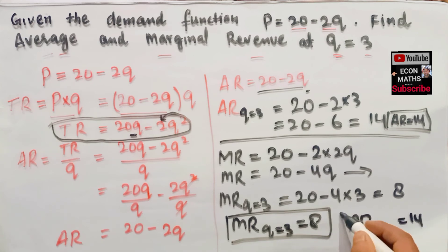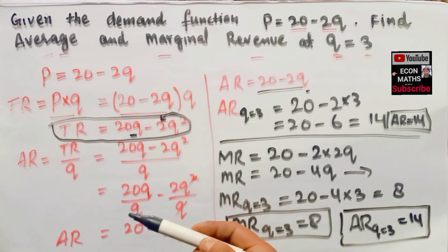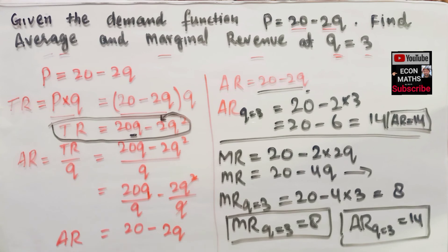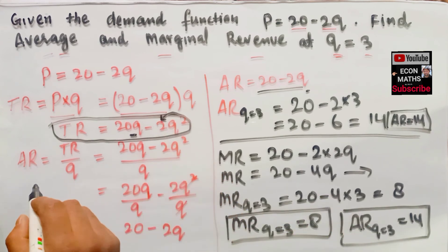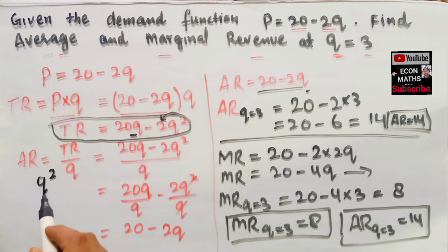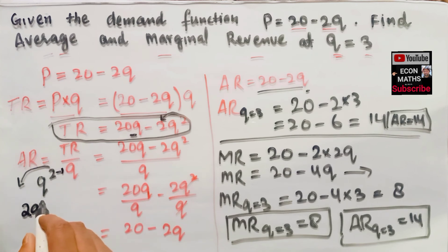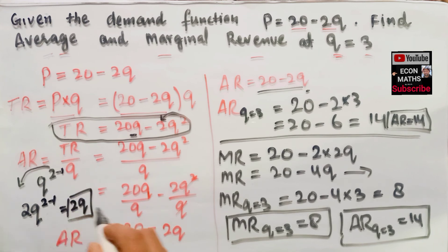I hope I made myself clear in this video. We just used basic differentiation to get the values of marginal and average revenue. To show how we differentiated: if we differentiate Q squared, we take the exponent 2 and make it the coefficient, giving 2Q, and then subtract 1 from the exponent, making it 2Q to the power 1, which is 2Q. That is how we got that result. Thank you.